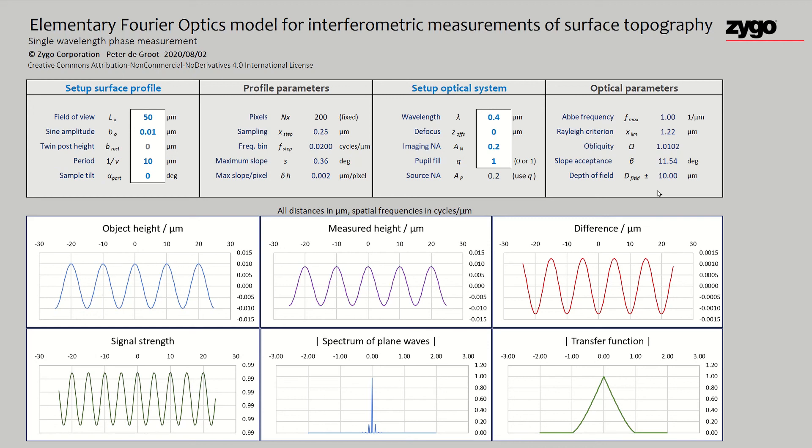So this is the Excel worksheet that illustrates the elementary Fourier optics model for interferometers that measure surface topography. It's pretty easy to use. There are a few fields here where you can change the object, some fields where you can change the optical system, and some reported parameters when you change these. And then, of course, there are these graphs, and we'll take a look at these one by one.